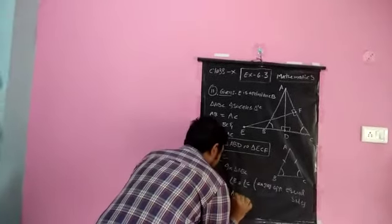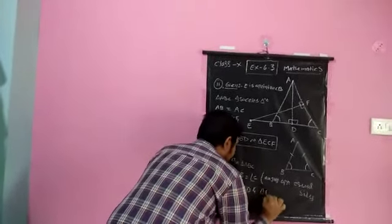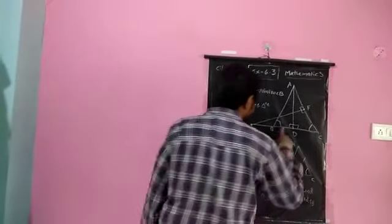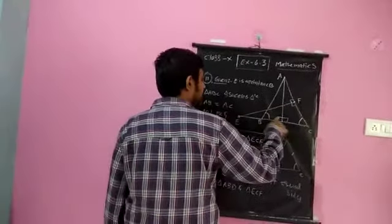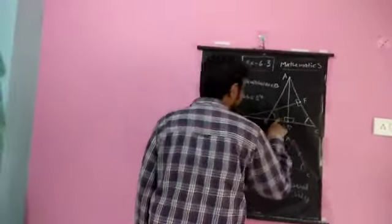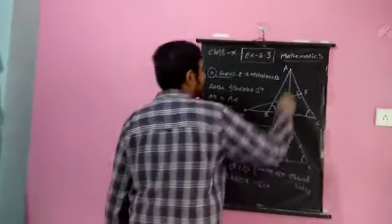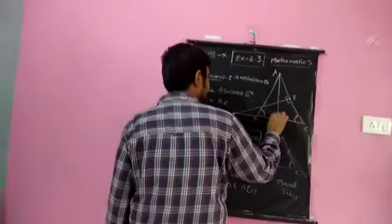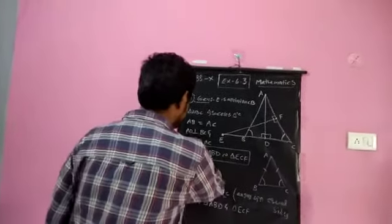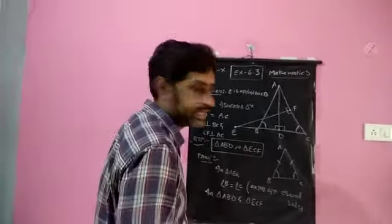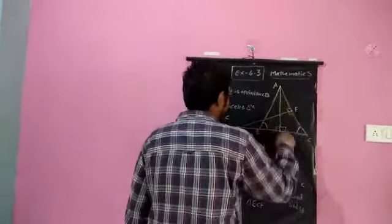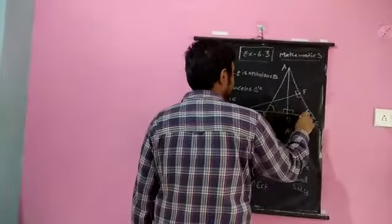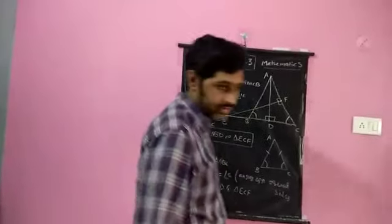In triangle ABD and triangle ECF: in triangle ECF, angle F is 90 degrees, and in triangle ABD, angle D is also 90 degrees. So one angle in each of these two triangles is 90 degrees, and angle B equals angle C — these two angles are equal to each other.